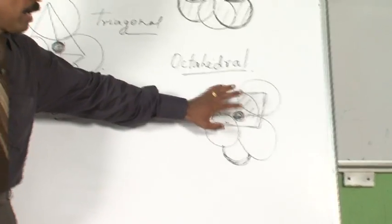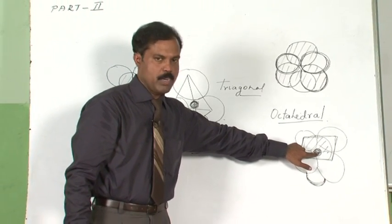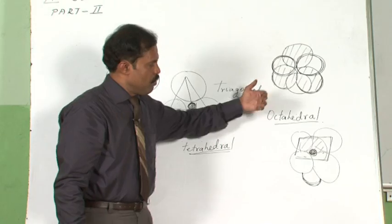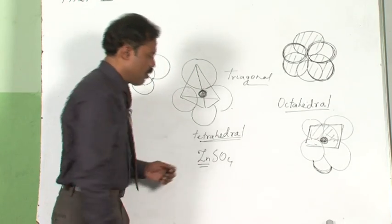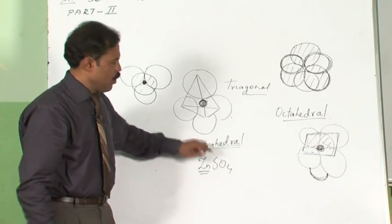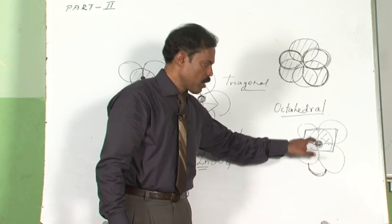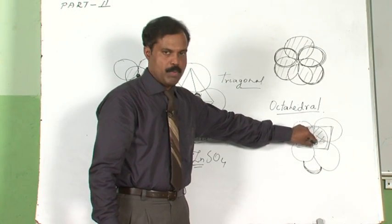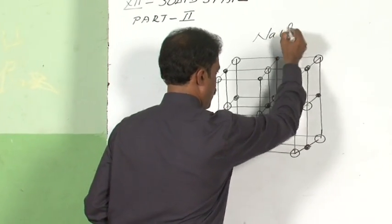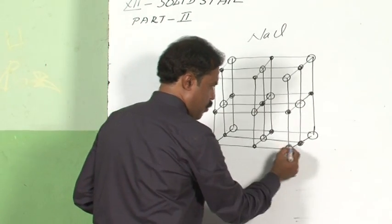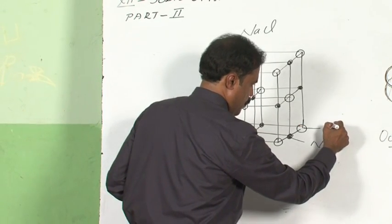To give you an idea, I will explain sodium chloride, where sodium ions remain in the octahedral voids created by the chloride ions. Whereas in zinc sulfate, zinc ions remain in the tetrahedral voids created by the SO₄²⁻ ions. I will draw the structure of sodium chloride to explain how sodium ions occupy the octahedral void.